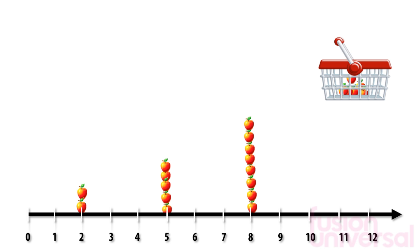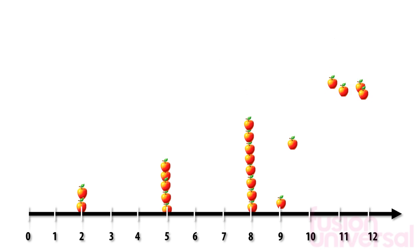Finally, the fourth basket. The final basket had 6 apples in it. You can see that the height of the piles increases as we go along the number line.